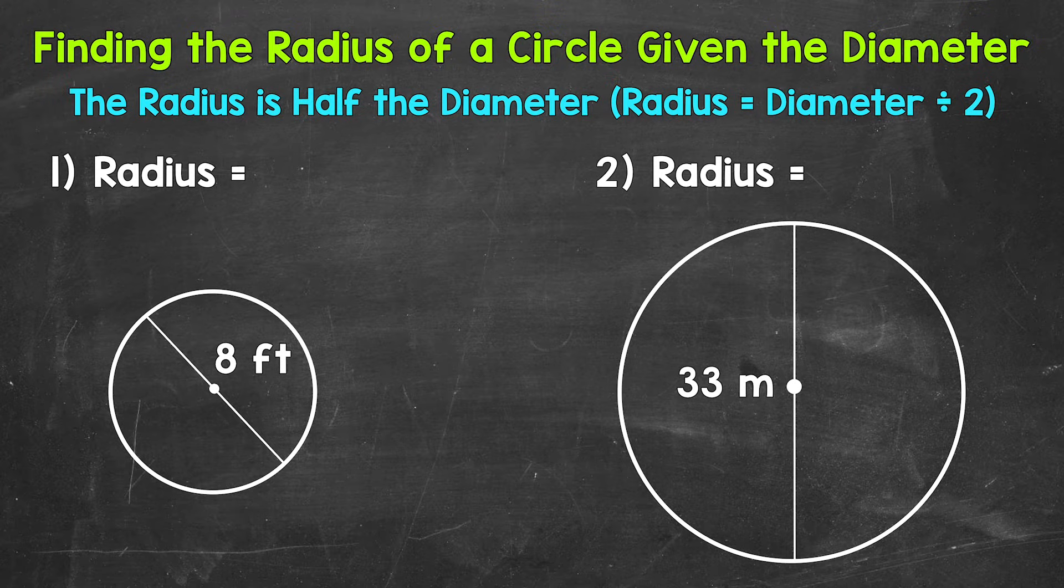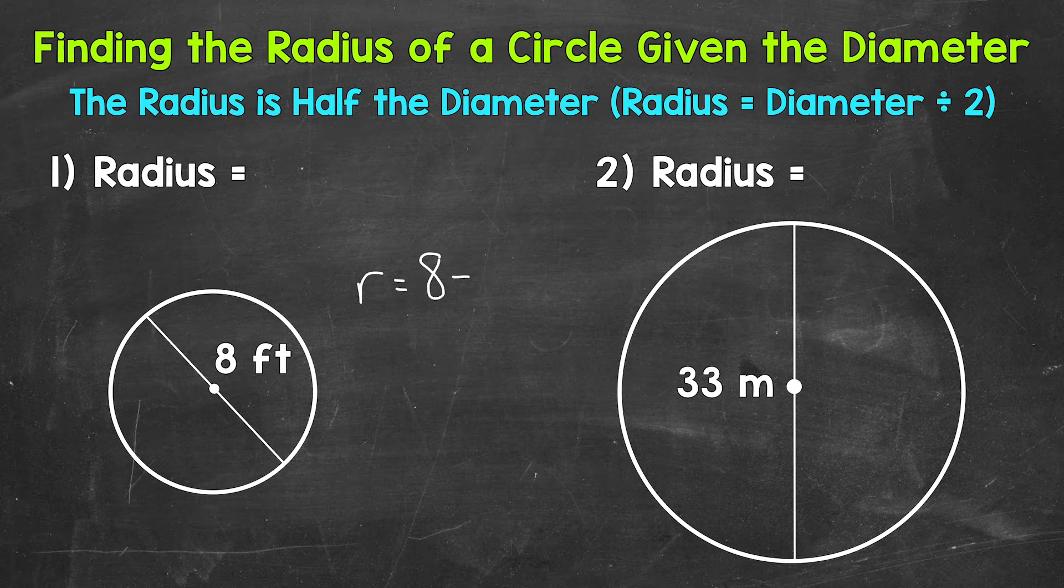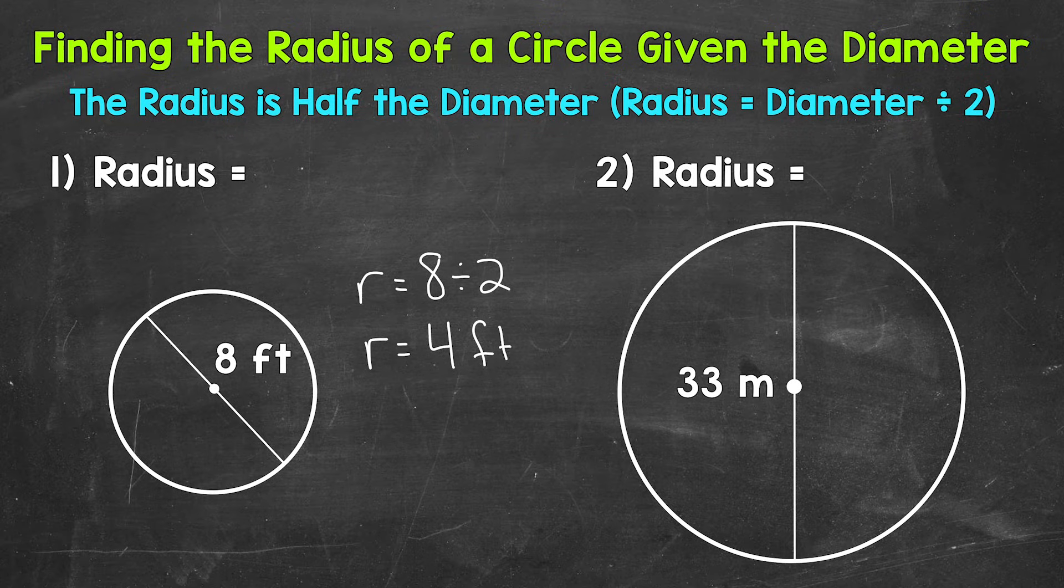Let's jump into our examples starting with number one where we have a given diameter of eight feet. So again we take our diameter and divide it by two to get the radius. So radius equals, well our given diameter is eight feet, and we divide that by two. So that gives us a radius of four feet.